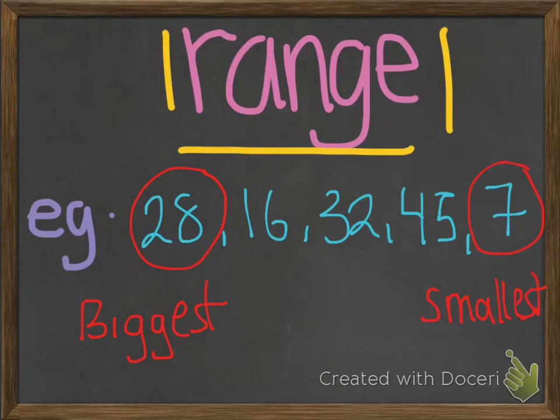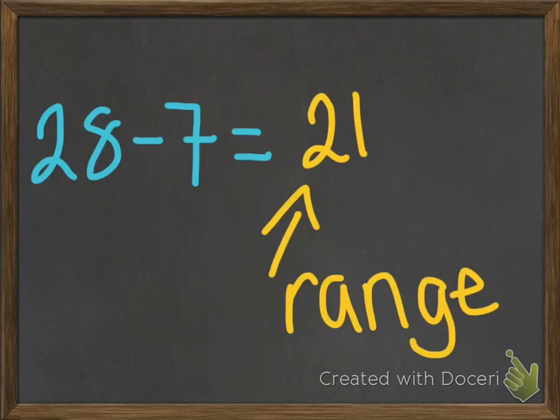Lastly, we will be finding the range. The range is the difference between the lowest and highest value. First, you would want to find the lowest and highest value in your data. In our data, the number with the largest value is 28 and the number with the smallest value is 7. Now, you subtract those two numbers. 28 minus 7 equals 21. This means that 21 is our range.